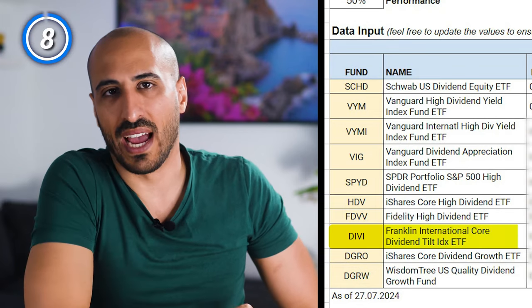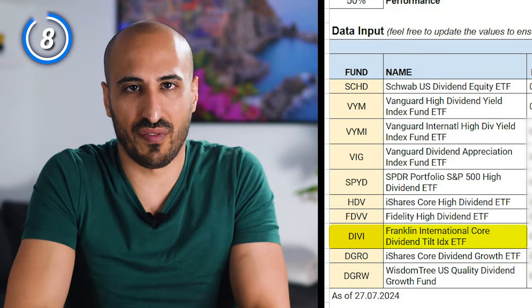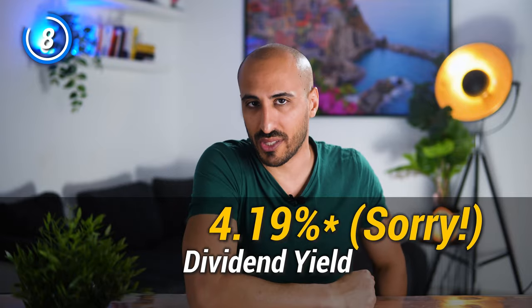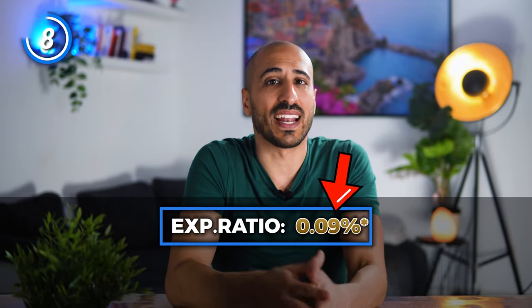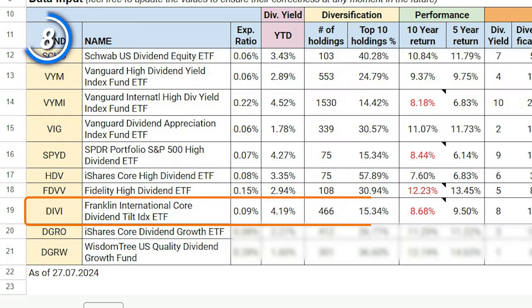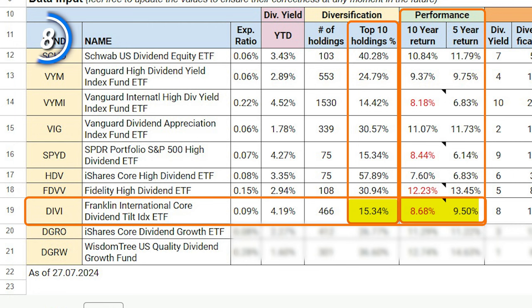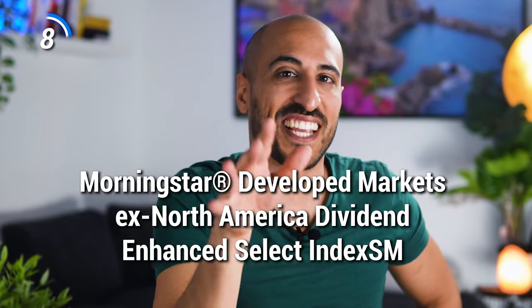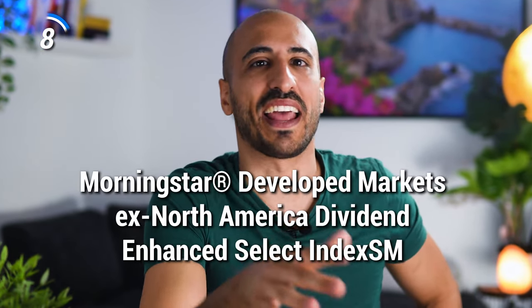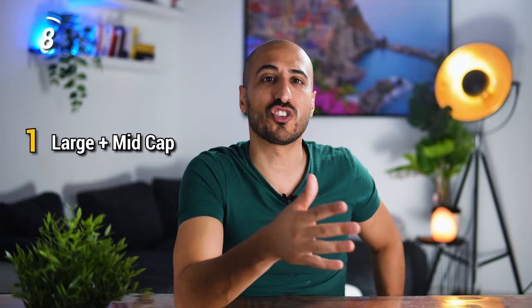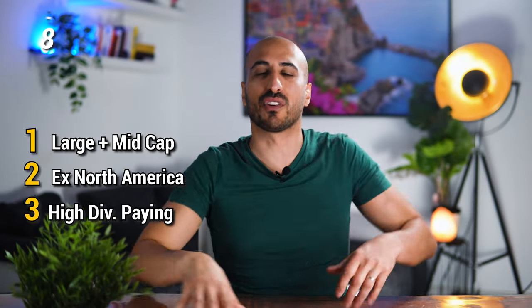Next up we have DIVI, the Franklin International Core Dividend Yield ETF. DIVI has a dividend yield of 2.27%, an expense ratio of 0.08%, and 412 holdings, with the first 10 weighing 15.34% of the portfolio. DIVI delivered an average annual return of 8.68% in the last 8 years since inception and 9.5% in the last 5. The underlying index — the Morningstar Developed Market Ex-North America Dividend Enhanced Select Index — targets large and mid-cap stocks outside North America with a high dividend yield.